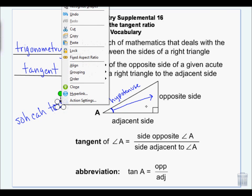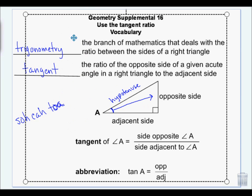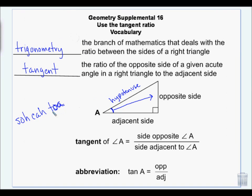TOA is tangent is opposite over adjacent. Tangent is opposite over adjacent. Opposite over adjacent. When we get to sine, sine is opposite over hypotenuse. And cosine is adjacent over hypotenuse. This is just a way to remember which is which. So we'll talk about that more again when we talk about sine and cosine.